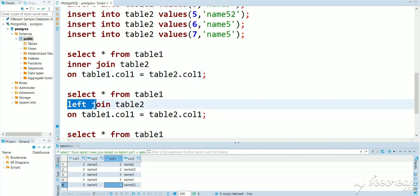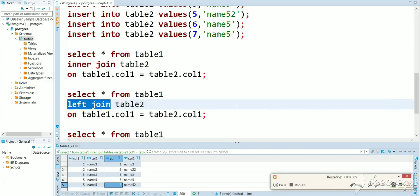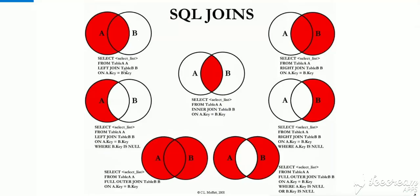Now let's go to left join. This diagram represents the left SQL join between two tables. If you do a left join with table 1 and table 2, we will get the intersection rows plus the rows which are not matching in table 1. Unlike inner join where we only get matching rows, here we get the matching rows plus the non-matching rows from table 1.